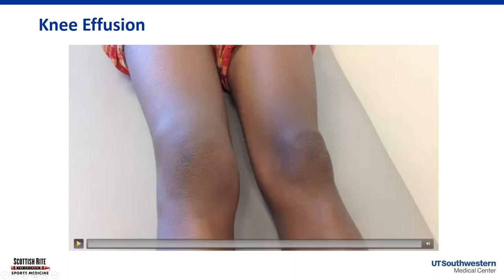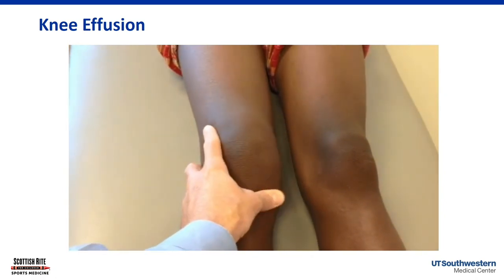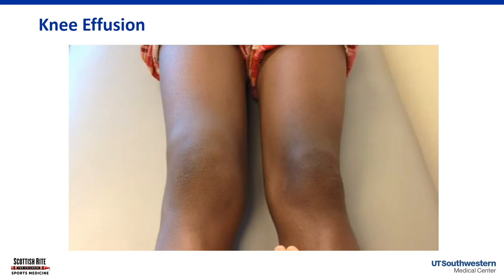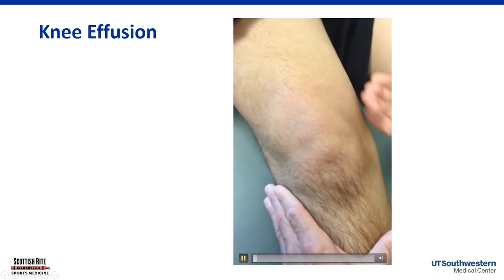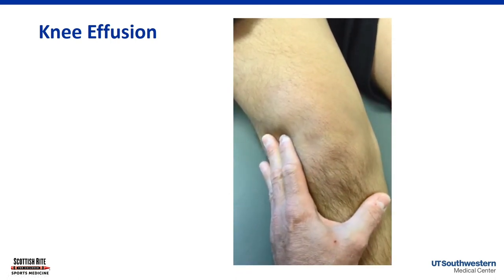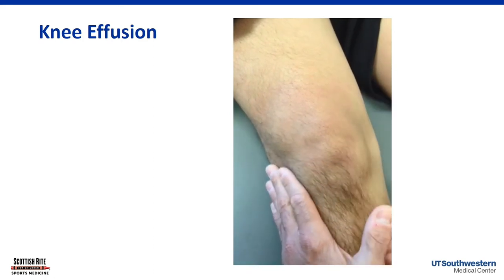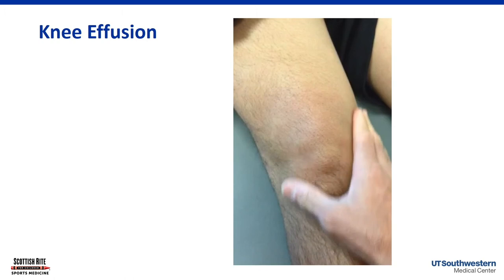Now, here's a physical examination of an effusion. The knee on the right-hand side of your screen is normal — you can see the concavities around the kneecap. But this knee on your left, the patient's right, you can see how bulbous the soft tissues look. The cardinal sign is that you've lost those concavities around the patella. Here's another example: if we press on the medial side of the knee, we can move that fluid wave from lateral to medial. If it's soft tissue swelling and not fluid in the joint, you can't move it around — that fluid wave is a cardinal sign of an effusion.